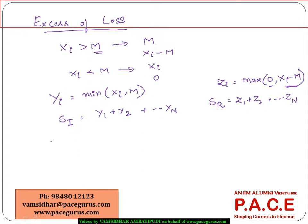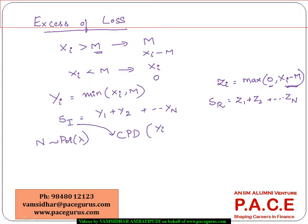This is where we need to understand the distributions. If I assume that N, the number of claims, follows a Poisson distribution with parameter lambda, then S_I, the aggregate claims from the insurer, is going to follow a compound Poisson distribution with Poisson parameter lambda, and the i-th individual claim amount is Y_I. The same applies for the reinsurer: S_R is going to follow a compound Poisson distribution with Poisson parameter lambda, and the i-th individual claim amount is Z_i.